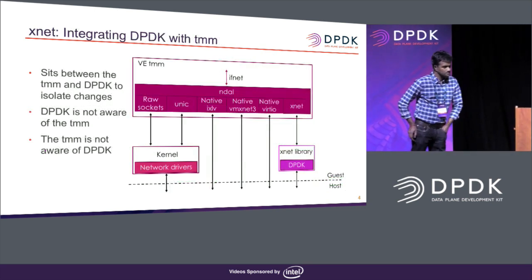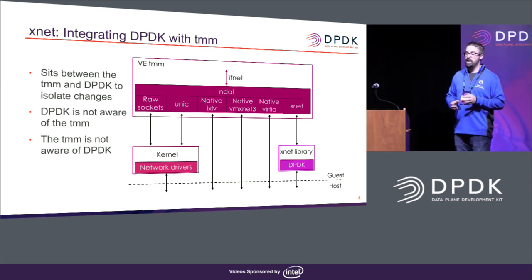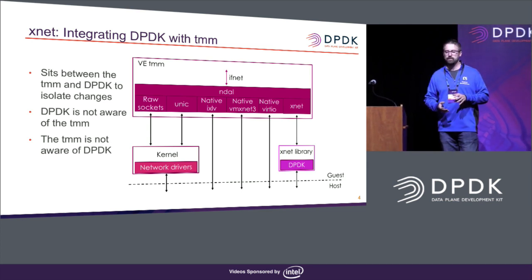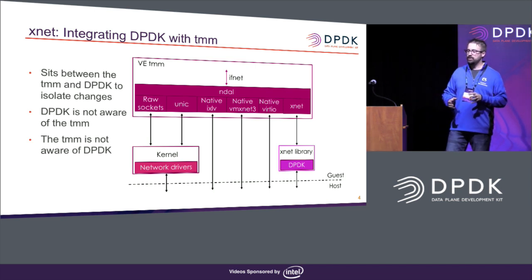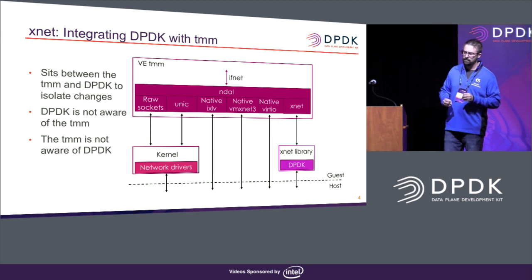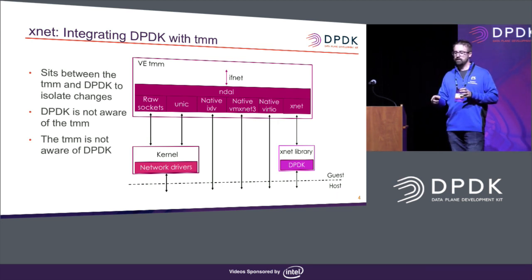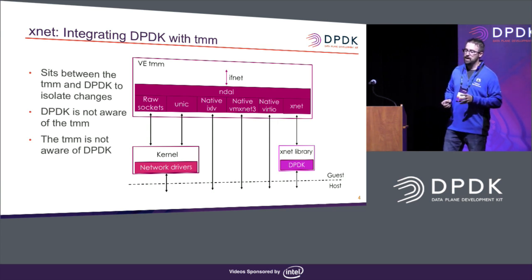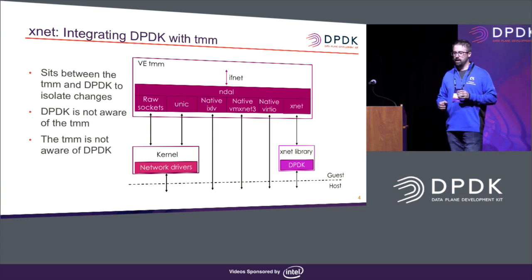The answer to how we combined those two things is we added an extra layer. This is a block diagram of the very bottom portion of the TMM stack, showing how the device drivers fit in. Off to the lower right, we have something called the Xnet library with DPDK, and directly above that there's an Xnet driver that's in the TMM. Everything on screen, with the exception of the kernel and the network drivers underneath, is still part of the TMM process — no IPC. That's all directly within TMM, including the Xnet library and DPDK.